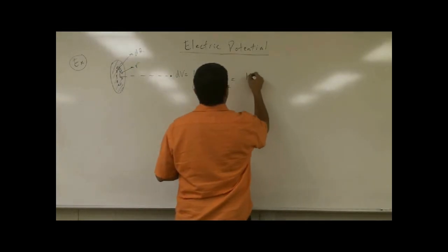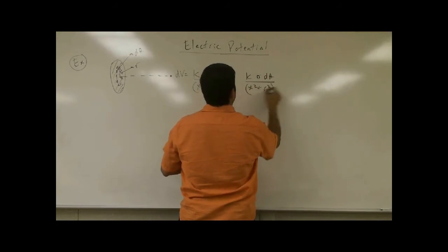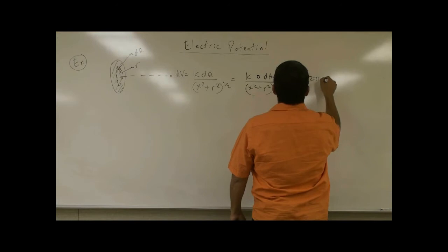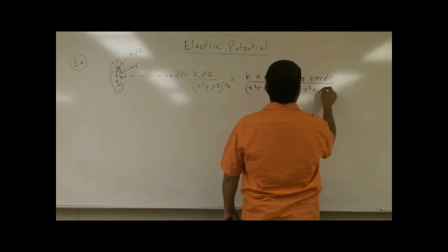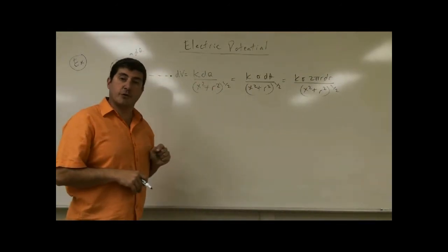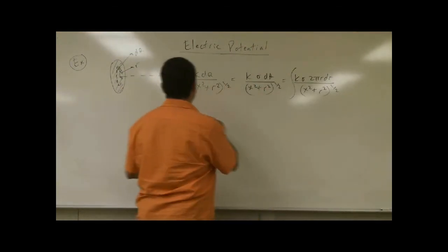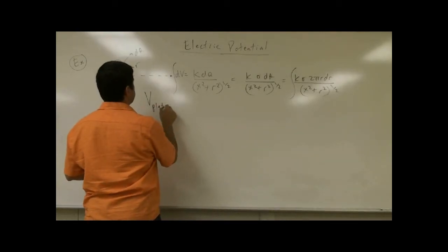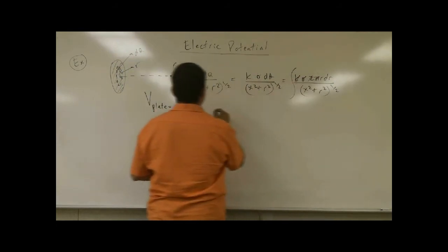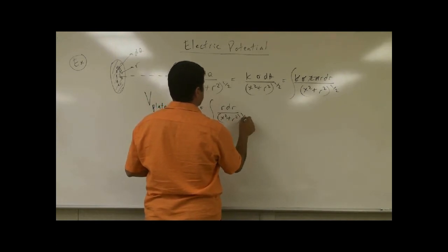I will say dq is equal to sigma dA, and of course dA is equal to 2 pi r dr. If the disc has uniform charge density, when I integrate this, the surface charge density comes out of the integral. Then the potential of the plate comes out to be 2 pi k sigma, integral of r dr over the square root of x squared plus r squared, from 0 to R.